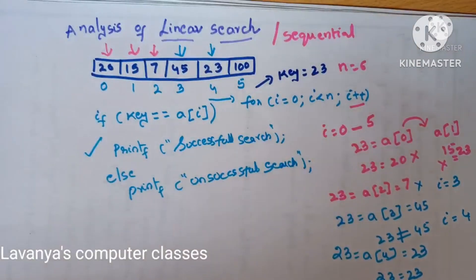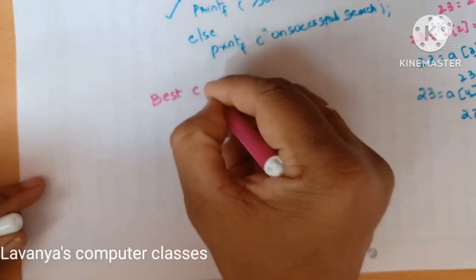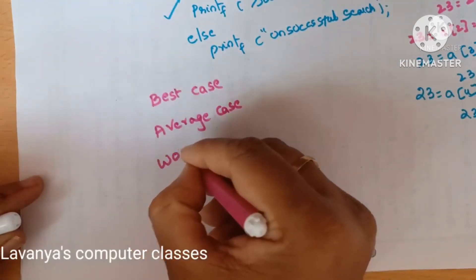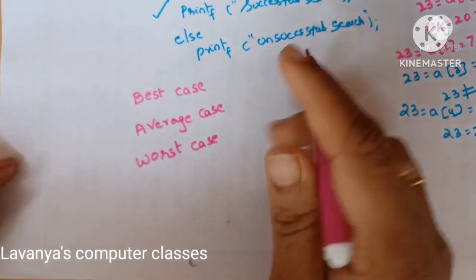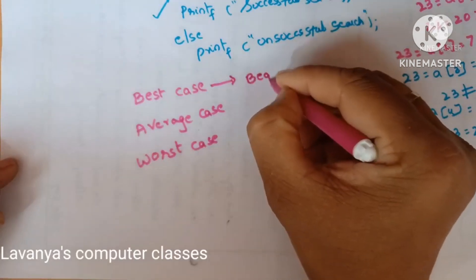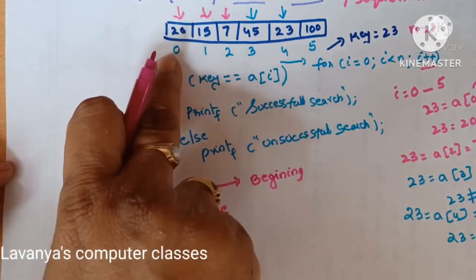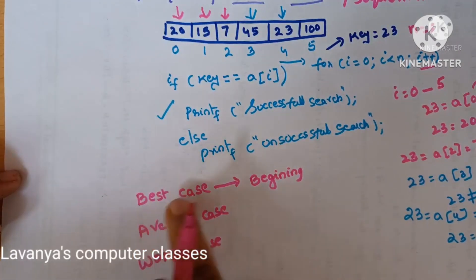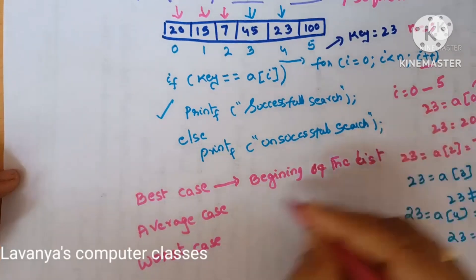Now I will go for analysis of linear search. Any algorithm is analyzed with three cases: best case, average case, and worst case. What is the best case? Best case means the search key is present at the beginning of the list. If the search element is available at the first position, then within the first iteration — the first time only — we get a successful search. That is called the best case.